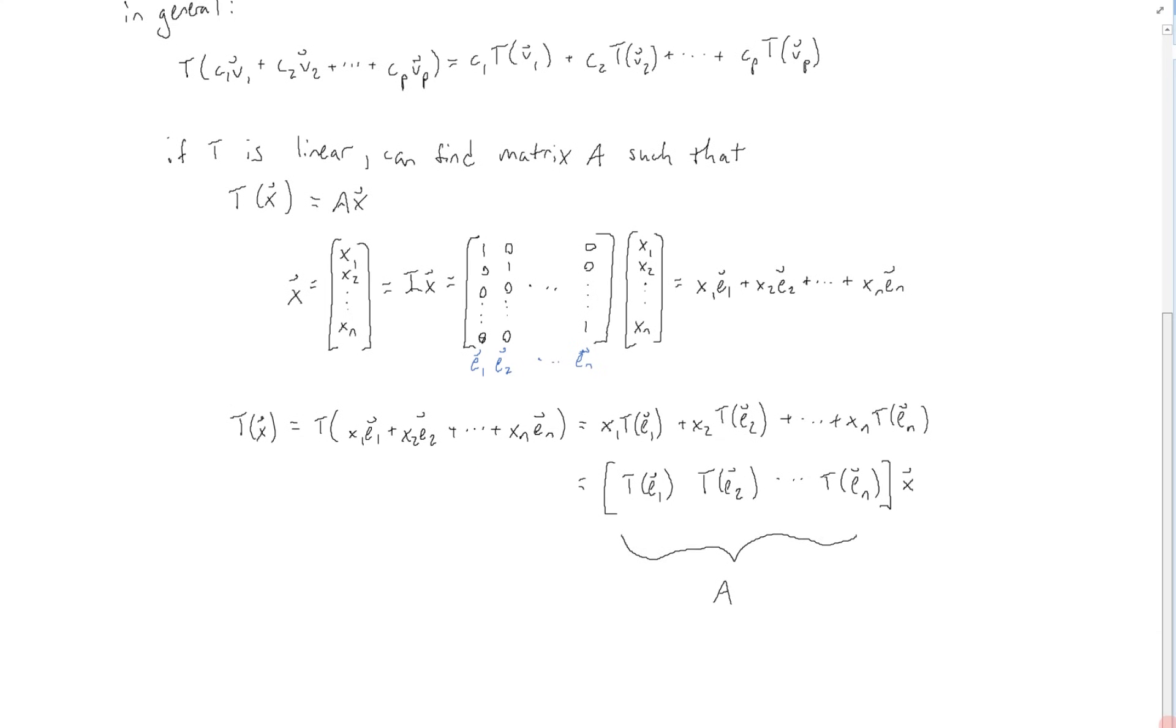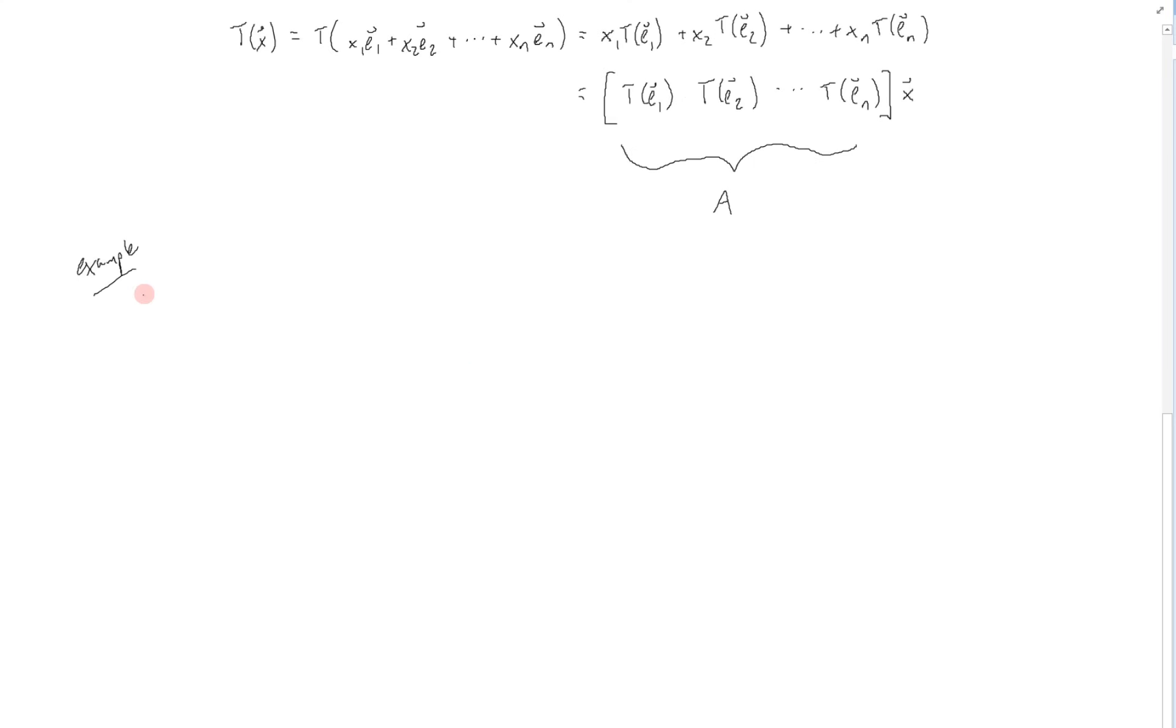So let's see how to apply this to some examples. Suppose we want to find a transformation matrix A to reflect points over the x2 axis. So we have to see what this is going to do to the columns of the identity matrix in R2. So let's take a look at that. The columns of the identity matrix are going to be here and here. So this is (1,0), or as we call it, E1. And this is (0,1), or E2.